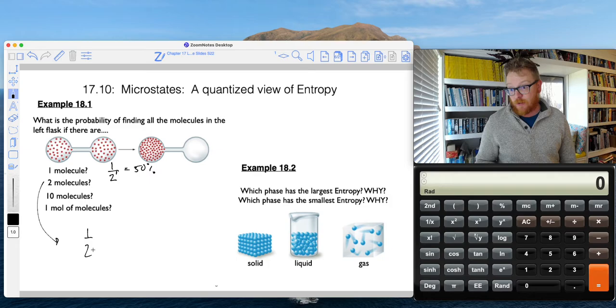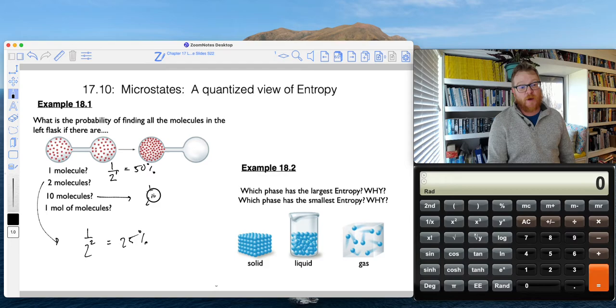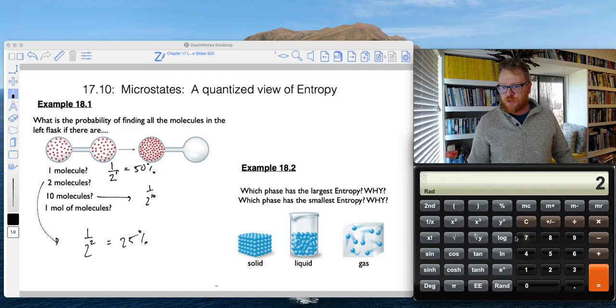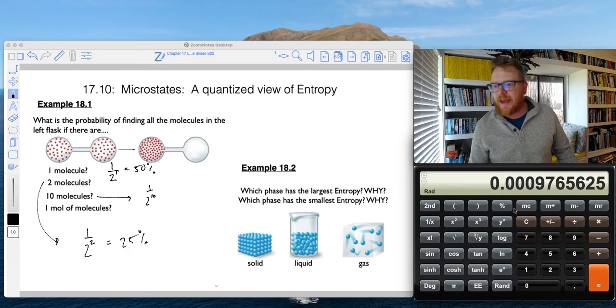And if there's two molecules, I've got to say one over two squared, which we know that's going to be one over four, which is 25%. If I kept going with this, it'd be one over two raised to the 10 power. And that starts getting to be a little bit more complicated. But we can still do that. So I could say two raised to the power 10 equals 1024.